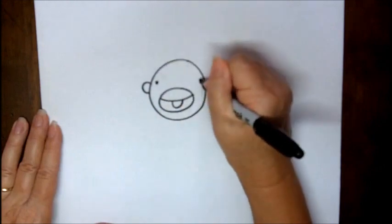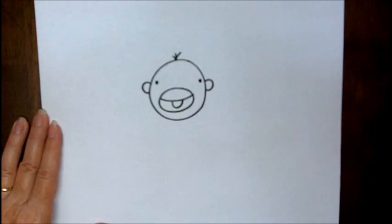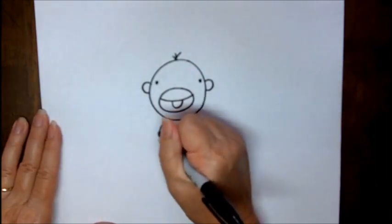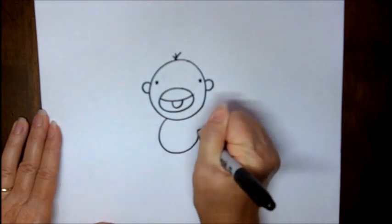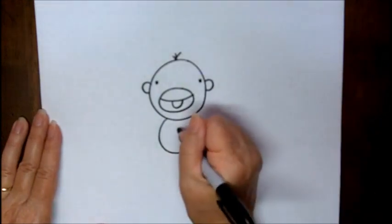wide set eyes, maybe some little hairs coming out the top. Now for his body, we're going to do, it's almost a circle. I like to make my bodies a little bit smaller than the head, like big heads. Then we're